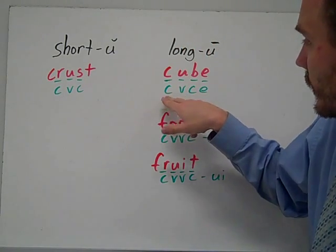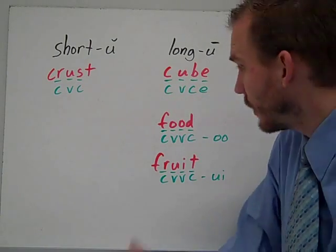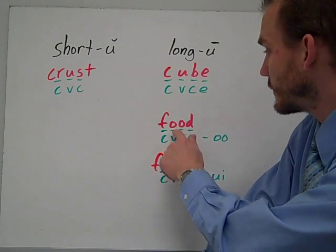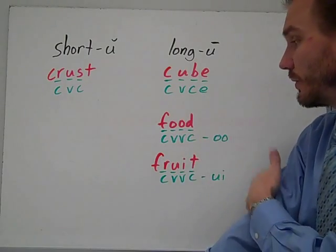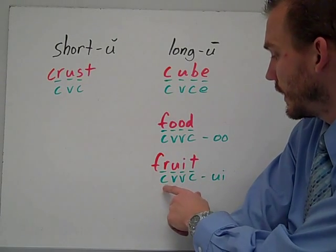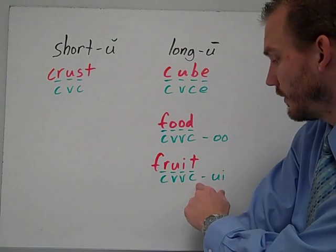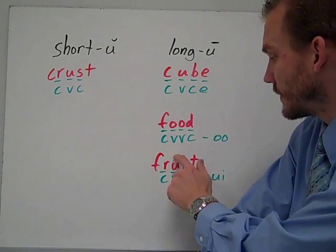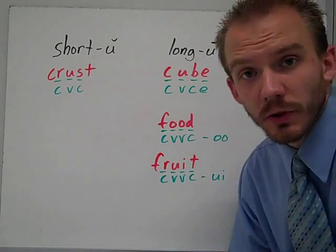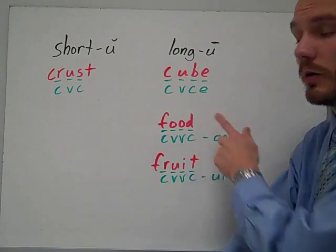Cube has a vowel-consonant pattern with an E at the end — CVCe — which is a very common long vowel pattern that causes the long U. The most common long U pattern with consonant-vowel-vowel-consonant is actually OO, with two O's in the middle. So you don't even have a U, but it makes the long U sound like in food. Fruit uses a UI in the middle, which is less common. Usually with long U, you have the OO.